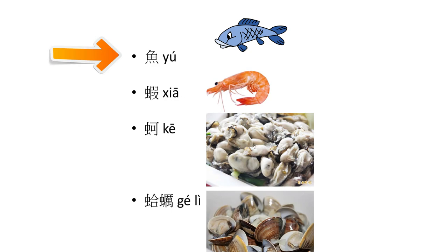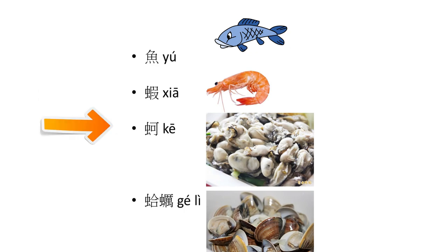魚 means fish. 蝦 means shrimp. 蚵 means oyster.